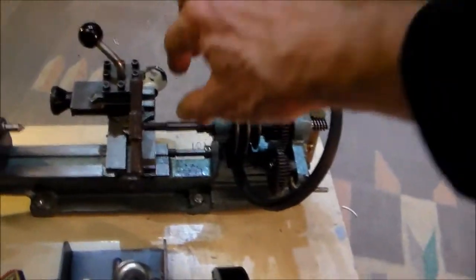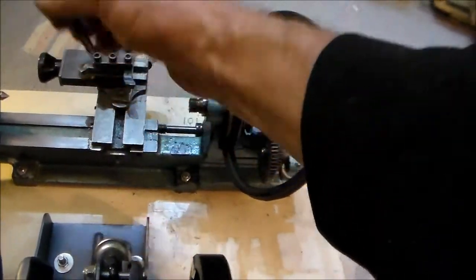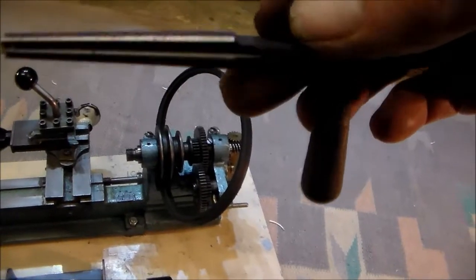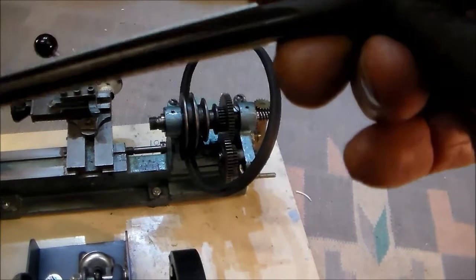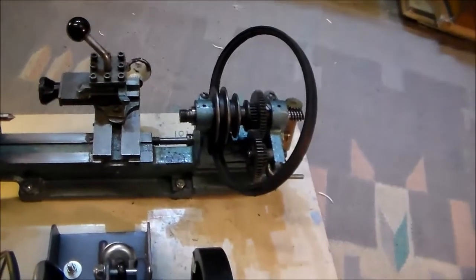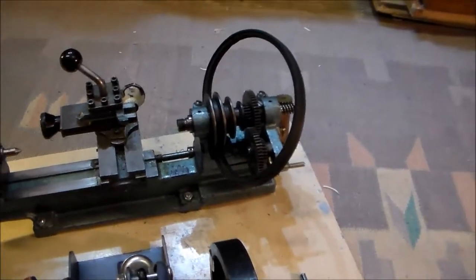Right, with the tailstock moved back, it's possible to remove the reamer. I'm just looking to see if it's picked up much. I don't think I've cut any metal from the inside of there.